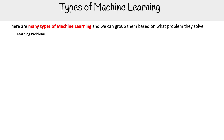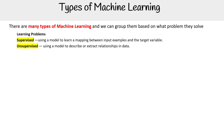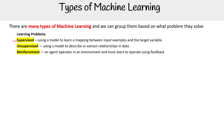The first group is learning problems. We have supervised, unsupervised, and reinforcement — three terms you're going to hear quite a bit with machine learning. The key thing here is that supervised is where you have labeled data, and unsupervised is where you're working with unlabeled data. For reinforcement, this is an agent that operates in an environment and must learn to operate using feedback.